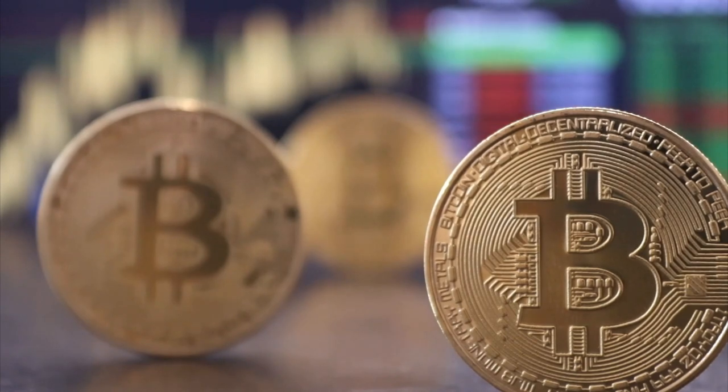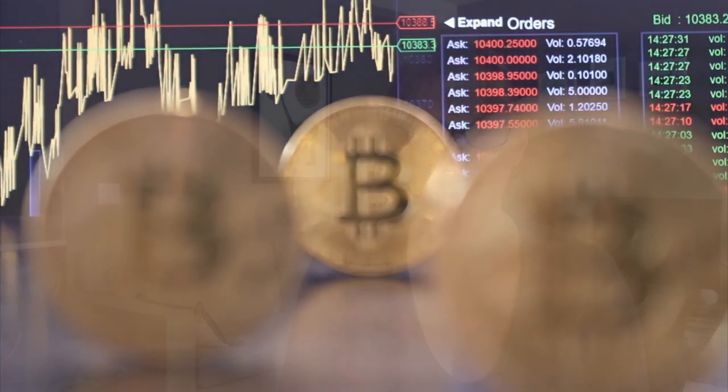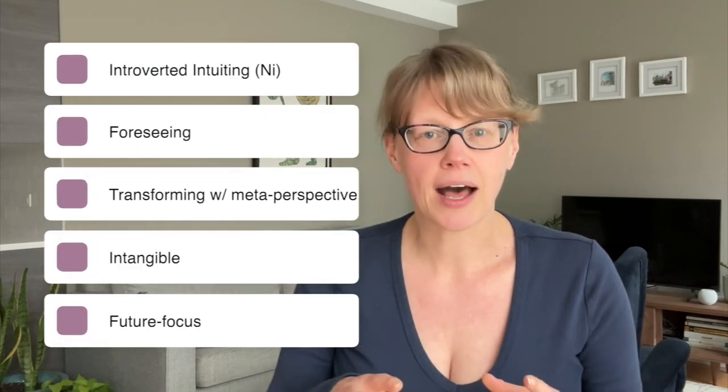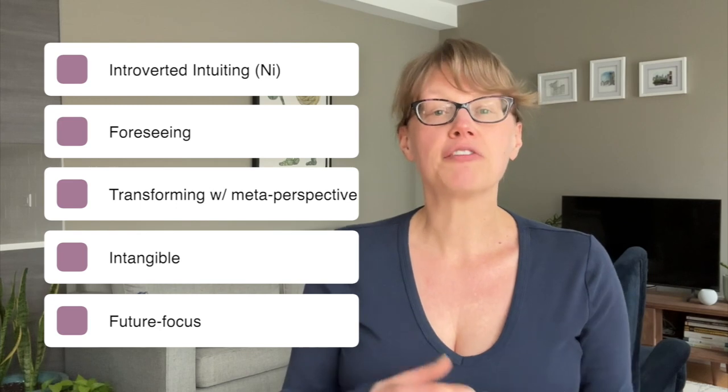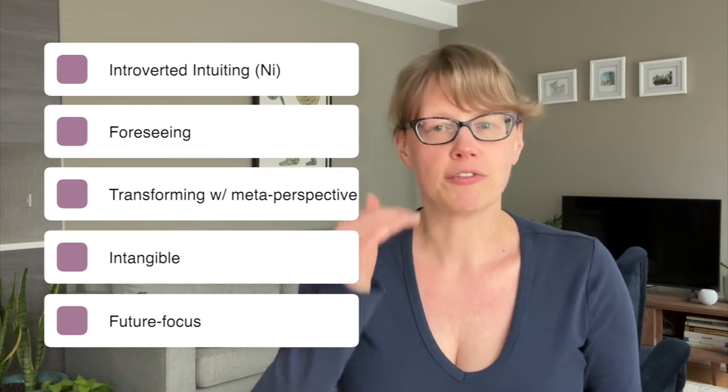What do you think the future of money is? Will coins still be around in 10 or 50 years, or is it all going to be online? What about world debt — what's going to happen to that? What your brain is doing now is called introverted intuiting, also known as foreseeing or transforming with a meta perspective. Introverted intuiting can be like a flash of insight, an aha moment in the shower, and it often comes with a sense of certainty — like you know this is going to happen. Sometimes it involves symbolic images you can't quite explain.